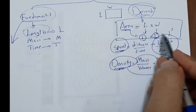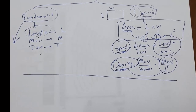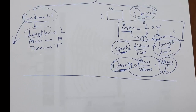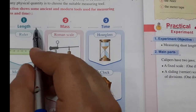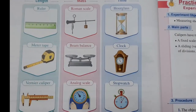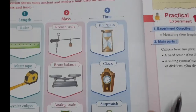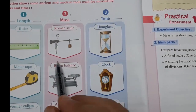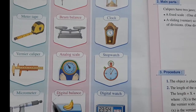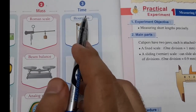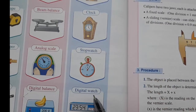Measuring tools for length include ruler, meter tape, vernier caliper, and micrometer for very small lengths. Measuring tools for mass include Roman scale, beam balance, analog scale, and digital balance. Measuring tools for time include hourglass, clock, stopwatch, and digital watch.